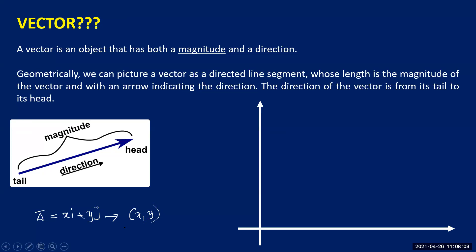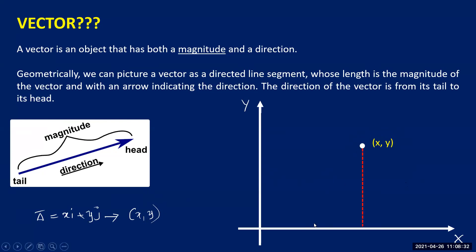Similar to how we represent a coordinate point in two-dimensional space, we represent a vector as x comma y by taking a point x comma y in the coordinate system with x-axis and y-axis. We take x units on the x-axis and y units on the y-axis, defining a point x comma y in two-dimensional space.